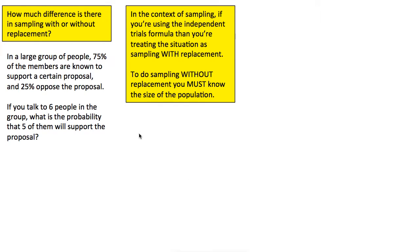In a large group of people — and notice I'm not specifying how large, I'm not specifying the size of the group — what we do know is that 75% of the members are known to support a certain proposal and 25% oppose the proposal. Based on that information, which does not include the size of the group, if you talk to six people in the group, what is the probability that five of them will support the proposal?